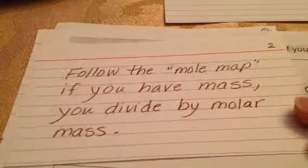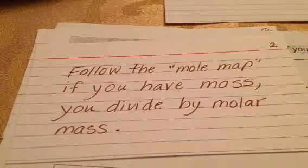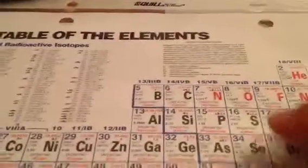So the molar mass - after I follow the mole map, I have mass and I divide by the molar mass. That means I have to look up on the periodic table the molar mass of carbon dioxide.